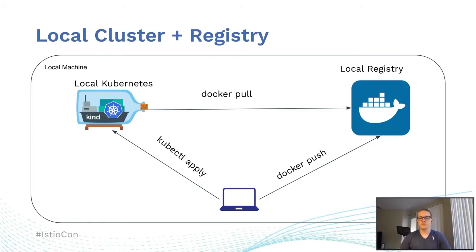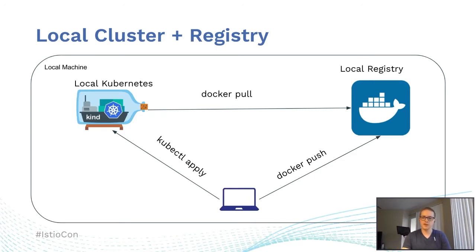The easiest improvement we can make is doing the exact same thing but bringing everything locally. We've replaced the cloud Kubernetes with local Kubernetes and the cloud Docker registry with a local Docker registry. Docker ships a local registry that you can run within your own Docker daemon locally. There's a vast array of local Kubernetes offerings — things like kind, k3s, microk8s, minikube — there are a lot of them out there. I personally use kind, which is Kubernetes in Docker, but you're free to use others. The development cycle looks pretty similar; you're still pushing and pulling images and doing the same kubectl commands, but because everything's local, all the Docker pushes and pulls happen over localhost, which is extremely fast.